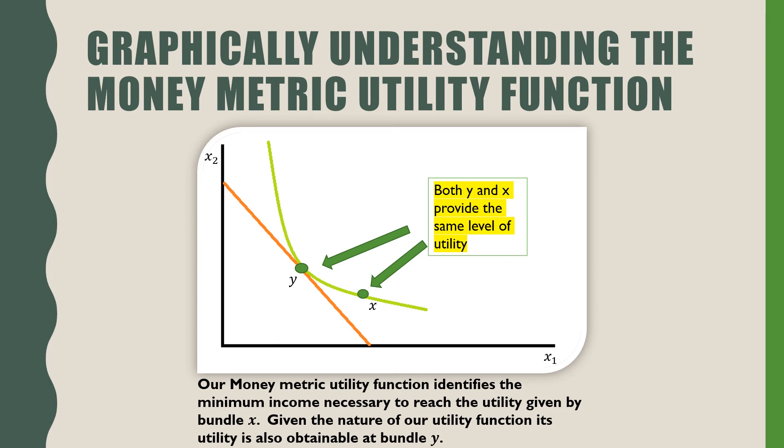In terms of graphically understanding the money metric utility function, our money metric utility function identifies the minimum income necessary to reach the utility given by bundle x. Given the nature of our utility function, it's also obtainable by bundle y. So what our money metric utility function tells us is how far out does our budget constraint have to be in order to reach a given level of utility.